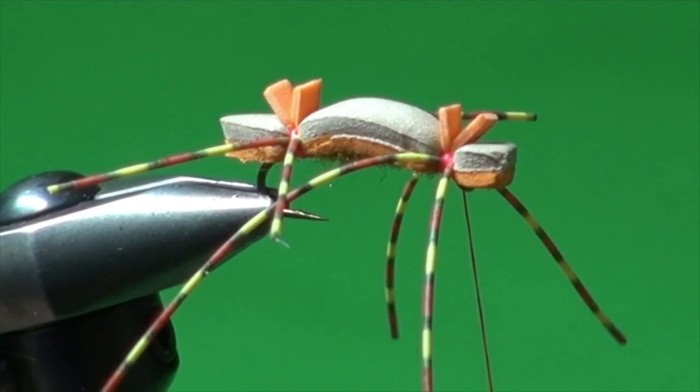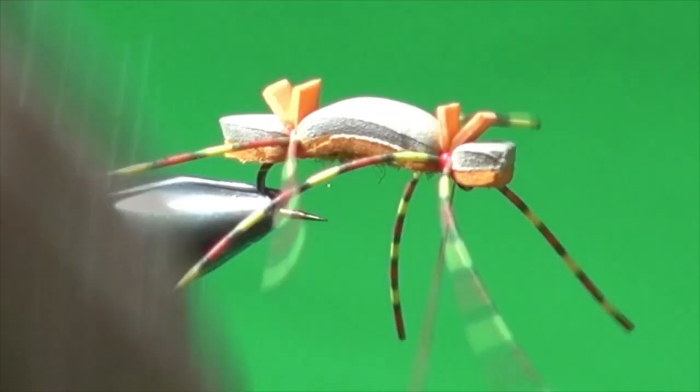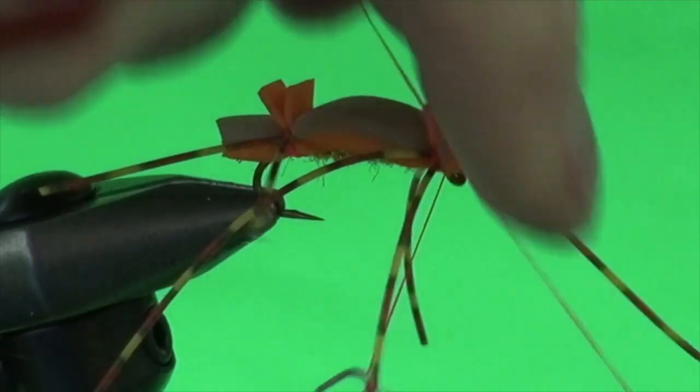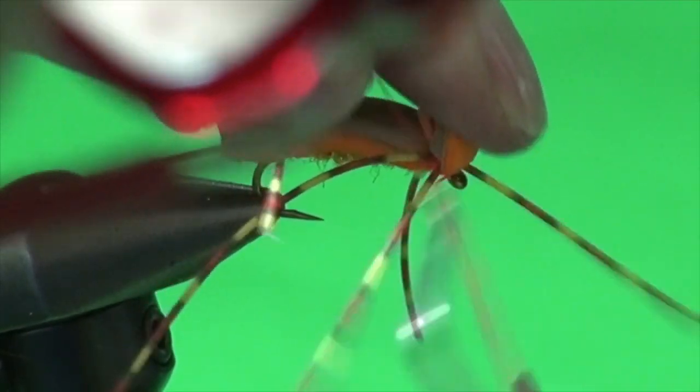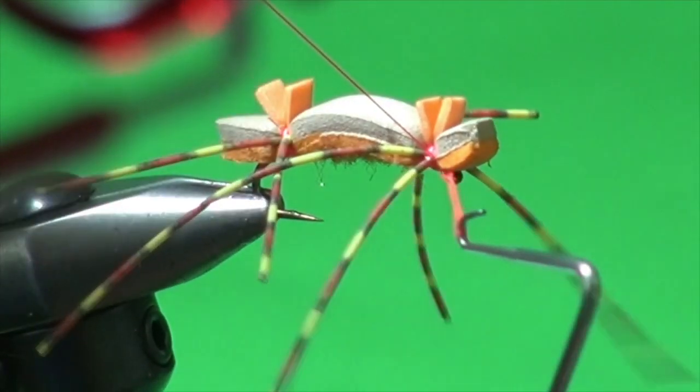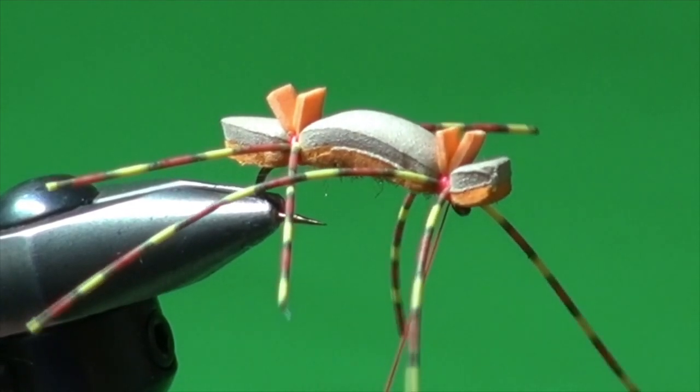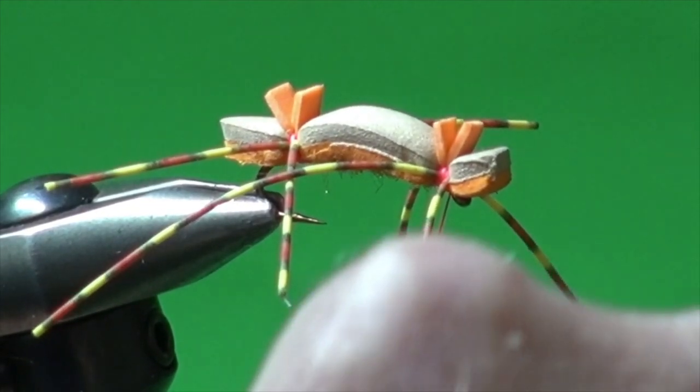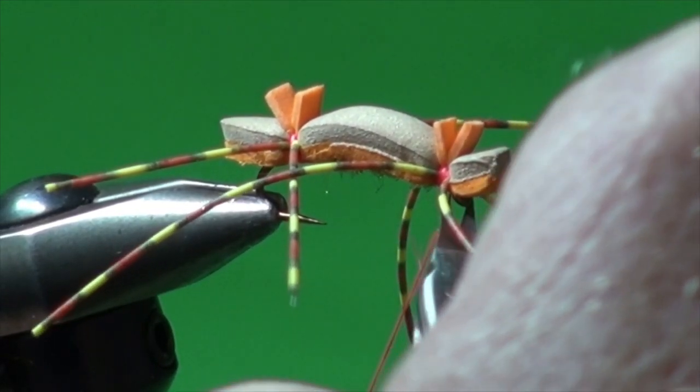And then I'm just going to whip finish. Hold this underneath the head. Try not to suck in a couple of legs. I could of course pre-trim them a little bit, but why do anything easy. Pull down. Now we just got to do some trimming and gluing.